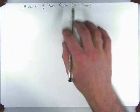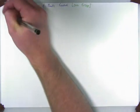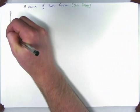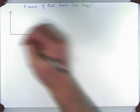This is a measure of Planck's constant data plotter. So we have our vertical axis, my horizontal axis.